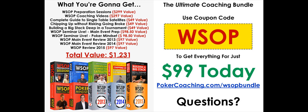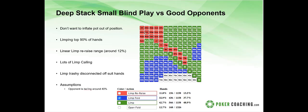Daryl asks about adjustments with two to three limpers in front. This webinar is mostly blind versus blind, but with two to three limps in front of us in the small blind, raise pretty tight — something like nines-plus, suited connectors, suited broadways. Limp the rest of that range against people who limped from earlier position.